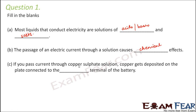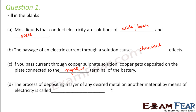If you pass current through a copper sulfate solution, copper gets deposited on the plate connected to the negative terminal of the battery. The process of depositing a layer of any desired metal on another material by means of electricity is called electroplating. Electricity plays an important role here as it drives the transfer of ions from the positive electrode to the negative electrode through the solution.